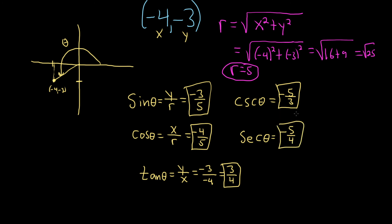And the reciprocal of tangent would be cotangent. So cotangent of theta would just be 4 over 3. That would be the value of cotangent of theta. I hope this video has been helpful.